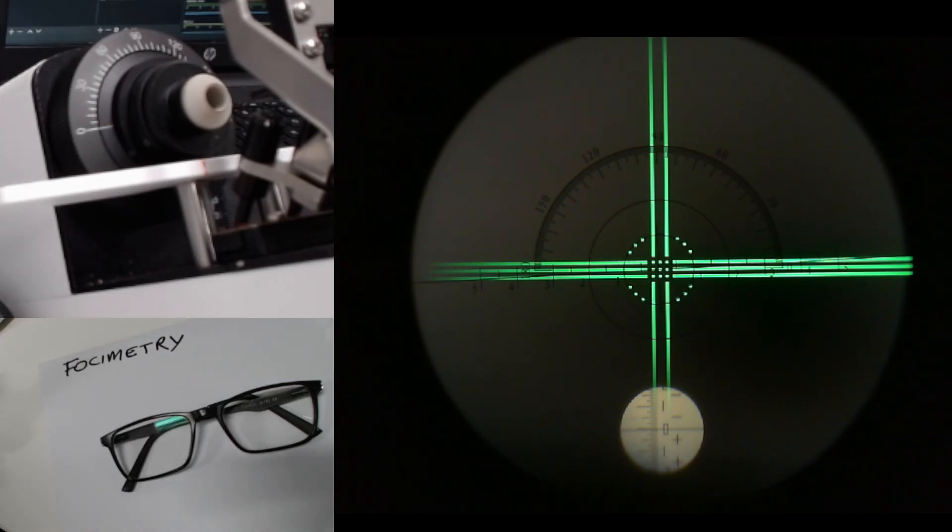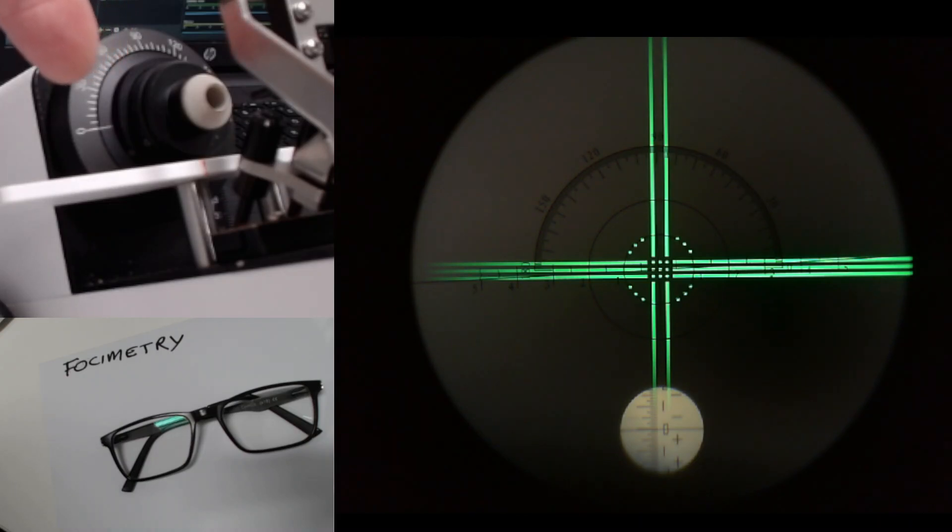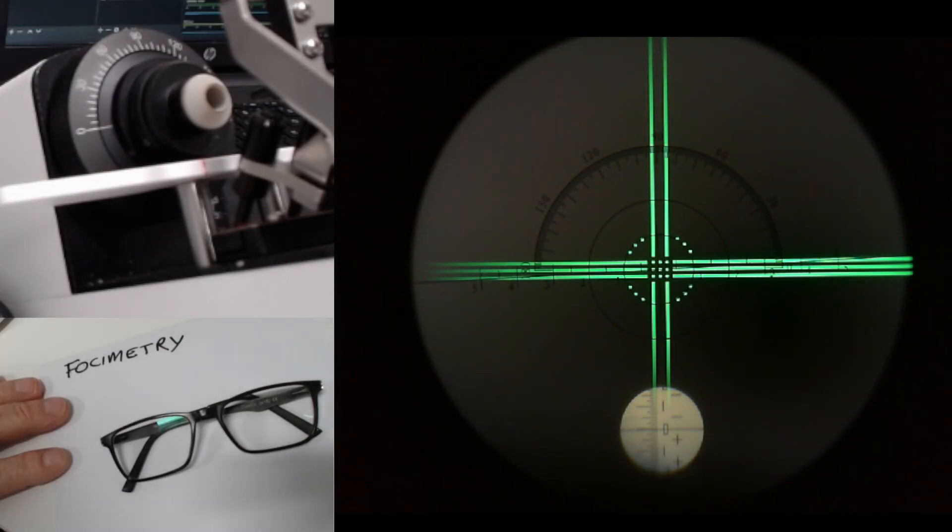I would suggest that we use the internal display of the focimeter to work out the sphere and the cylinder powers, and that we use the external axis scale here to read off the axis. There are technical reasons why I suggest that we do it this way, which we can talk about down the line if need be.